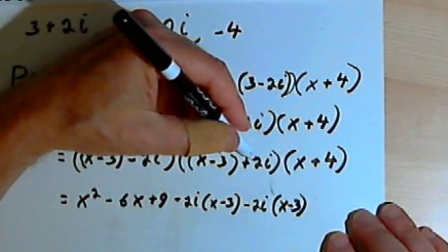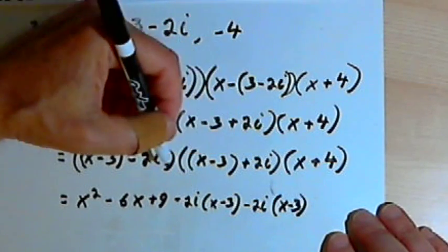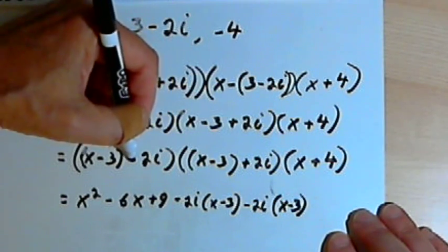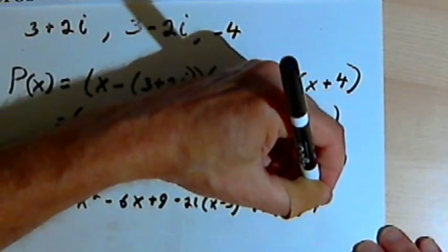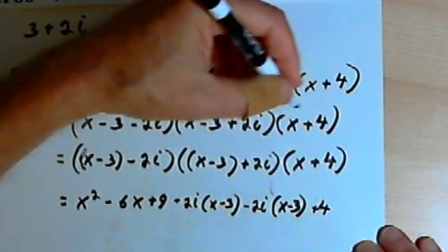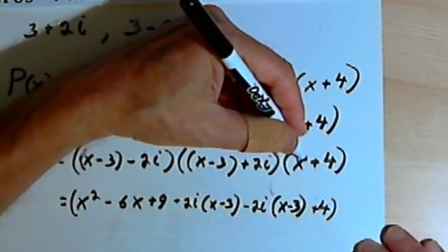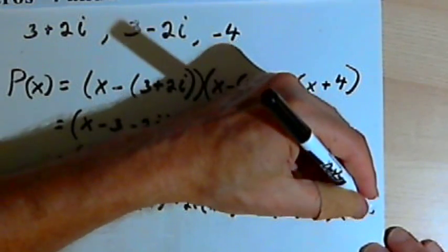And then I would multiply the last, the negative 2i times the positive 2i. Well, negative 2 times positive 2 is negative 4. i times i is i squared, and i squared is negative 1. So negative 4 times negative 1 is positive 4.